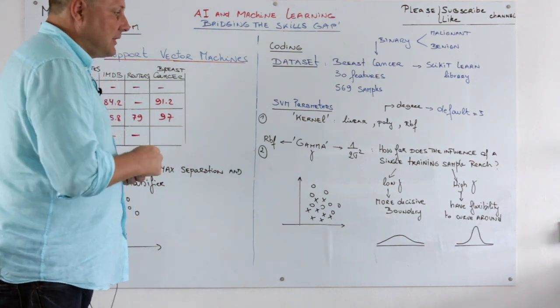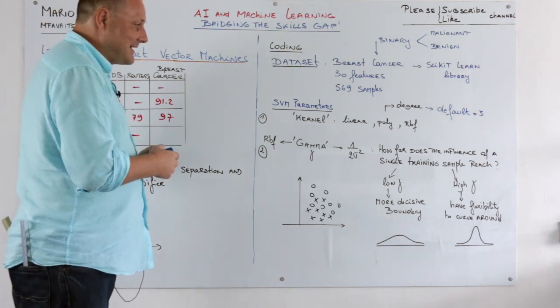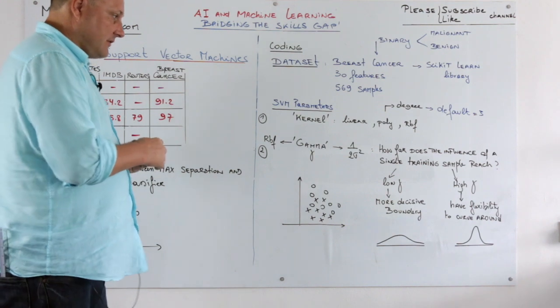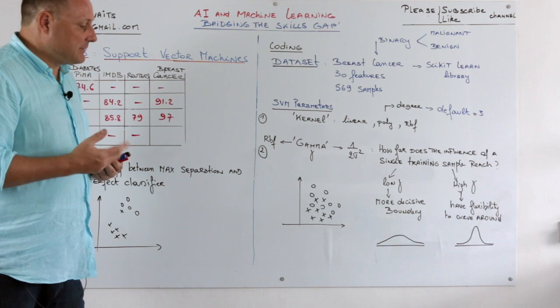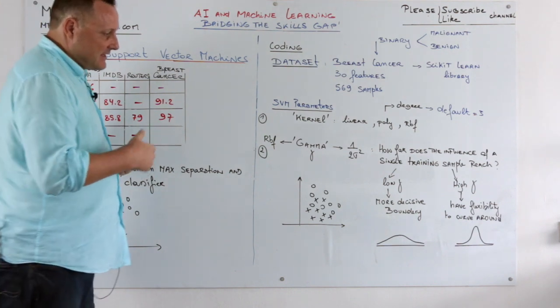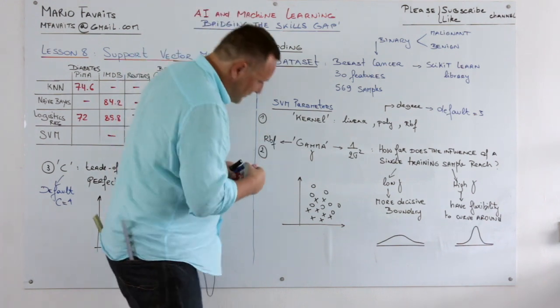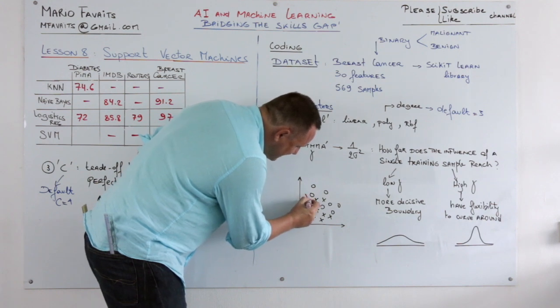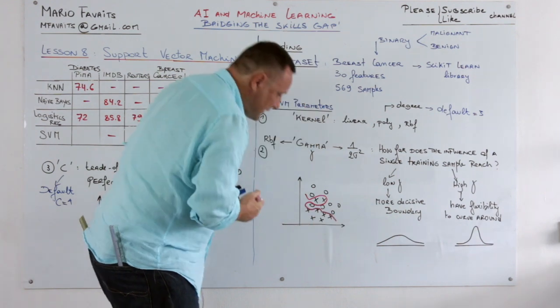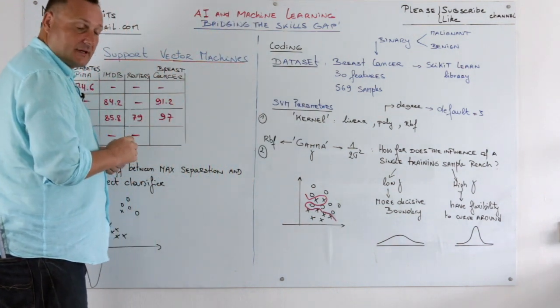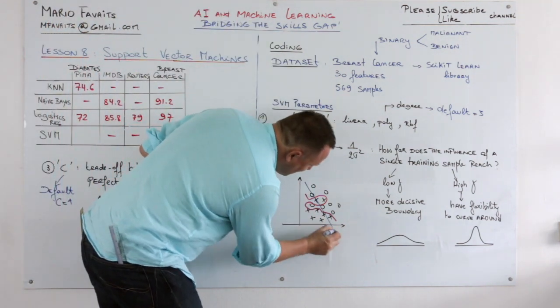What does gamma do? Well, it decides how far the influence of a single training sample reaches. So if you have a high gamma, you have a lot of flexibility to curve around these points, whereas if you have a lower gamma, your decision boundary is gonna be more decisive. So for a higher gamma you'll get something like this to classify all the crosses, whereas if you have a low gamma, your decision boundary will be a little bit more decisive.